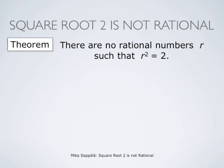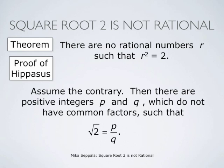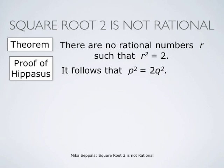We present also a second proof for the fact that there are no rational numbers R such that R squared equals 2. This proof is the original proof of Hipasus, about 2500 years old already. Also in this proof, we first assume the contrary and show that this leads to a contradiction. If there is a rational number R such that R squared equals 2, then there are positive integers P and Q with no common factors such that P divided by Q equals square root of 2. If P divided by Q equals square root of 2, then P squared divided by Q squared equals 2, which means P squared equals 2 times Q squared.